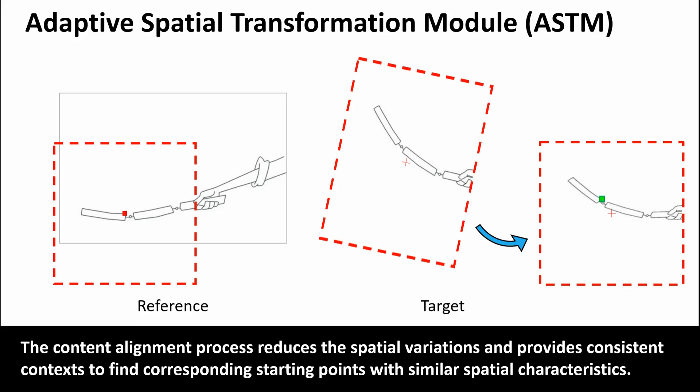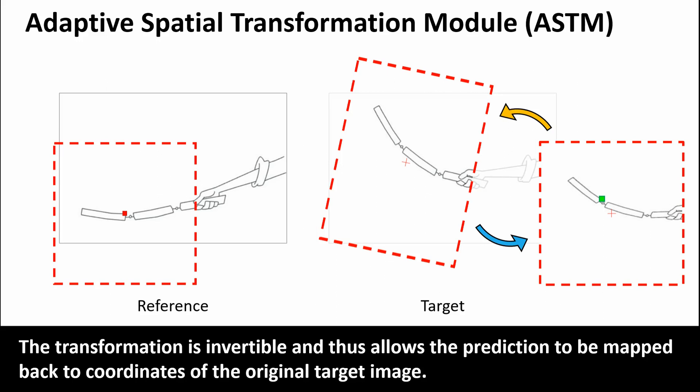The content alignment process reduces the spatial variations and provides consistent contexts to find corresponding starting points with similar spatial characteristics. The transformation is invertible and thus allows the prediction to be mapped back to coordinates of the original target image.